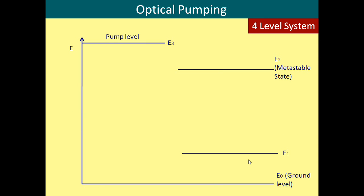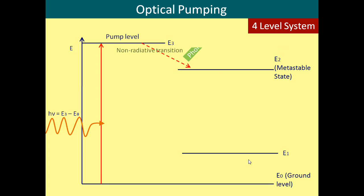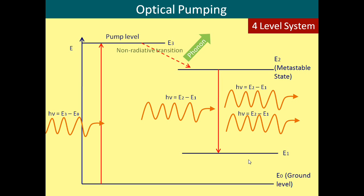As before, the atoms are pumped to the pump level, followed by a fast, non-radiative transition. Stimulated emission now occurs, but instead of dropping to the ground level, it drops to the additional energy level labelled here as E1. Finally, the atom drops back down to the ground level by undergoing a second non-radiative transition.